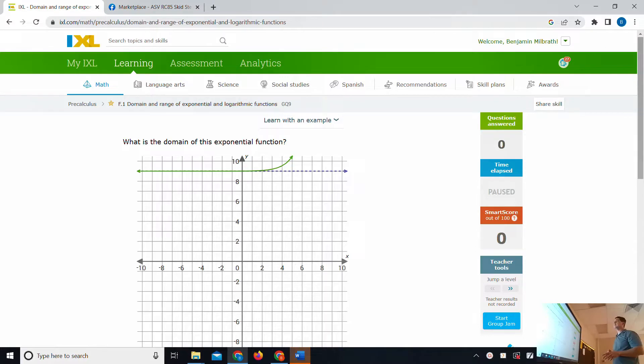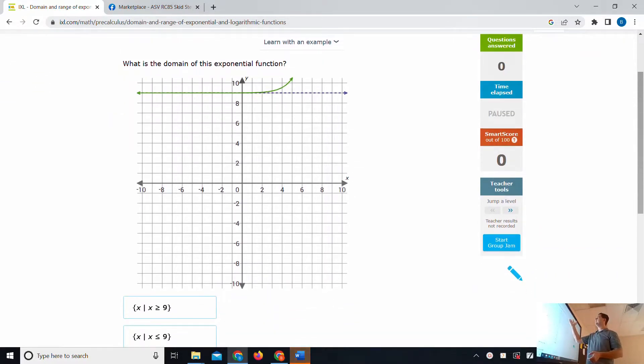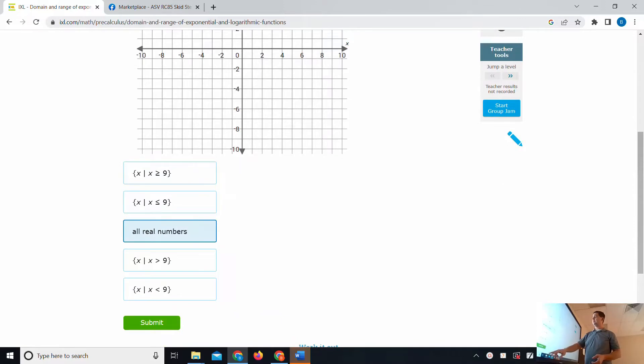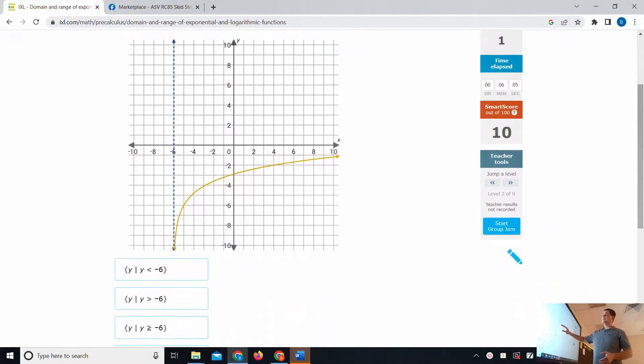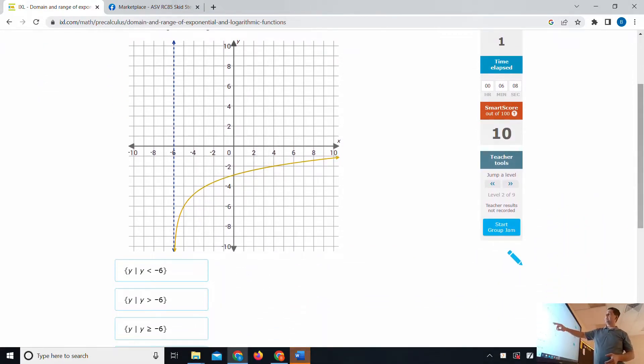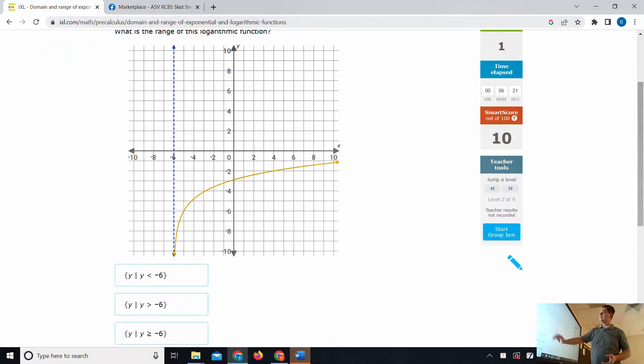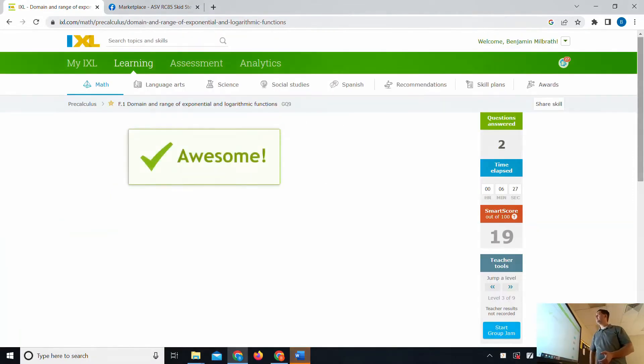You're not going to have too much of a problem on F1. It's domain and range. And here we have a graph, so that's going to be easy. The graph, as you can tell, is running from negative infinity to positive infinity. And they are asking for domain, right? All real numbers. Awesome!